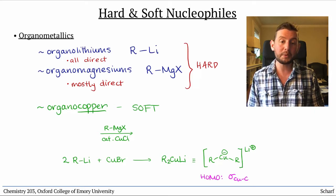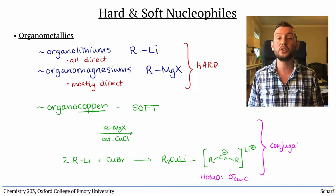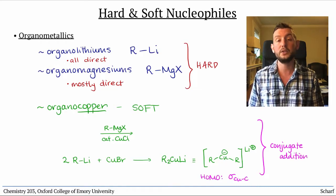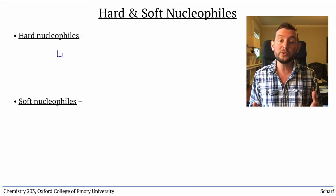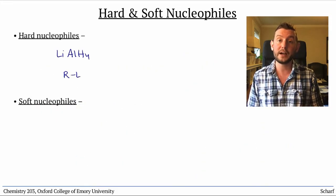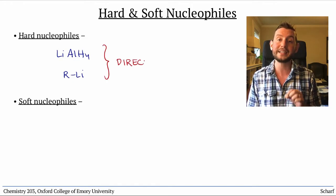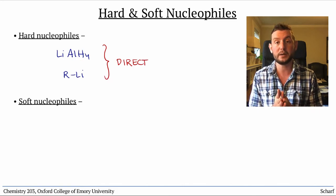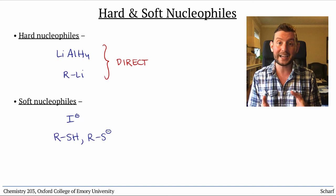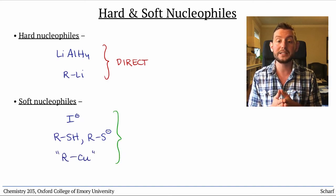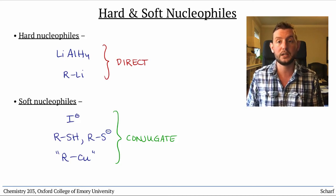These organocopper reagents selectively perform conjugate addition, and are useful tools in making new carbon-carbon bonds. To summarize, hard nucleophiles like lithium aluminum hydride and organolithium reagents selectively perform direct addition to alpha-beta-unsaturated carbonyl compounds, while soft nucleophiles like iodide, thiols and thiolates, and organocopper reagents selectively perform conjugate addition.